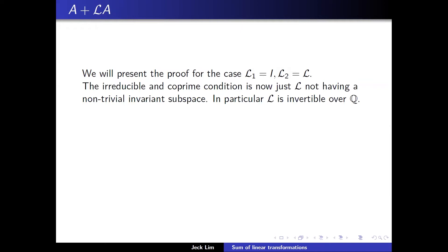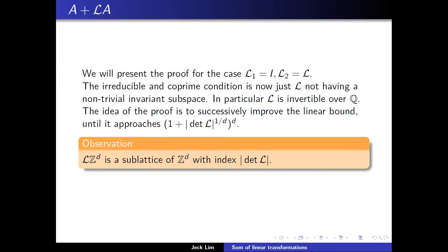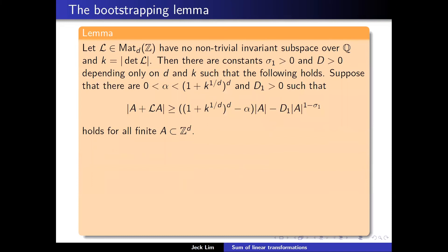For the case A + LA: the irreducible and co-prime condition here is just that L does not have a non-trivial invariant subspace, i.e., it has to be invertible over Q. The idea of the proof is to successively improve the linear bound until we get the desired bound. An important observation is that L(Z^d) is a sub-lattice, and the index of this sub-lattice is the determinant. The way we improve the bound is by the so-called bootstrapping lemma.